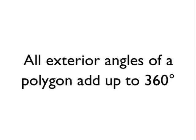The main thing that you need to remember about exterior angles on polygons is that they all add up to 360 degrees. So all exterior angles of a polygon add up to 360 degrees.